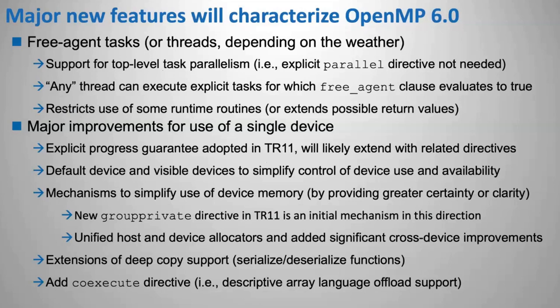Now I want to go over some of the major features that we're targeting. We've made comments in the past, but these are really a much firmer impression of what we're going to do. The first big thing that we're focusing on in the very near future — and this I am confident will be available in TR12 that we'll release next November — is what we're calling free agent tasks. What this does is it allows us to support task parallelism at the top level of your program, so you won't need an OpenMP parallel region just in order to execute your tasks in parallel.